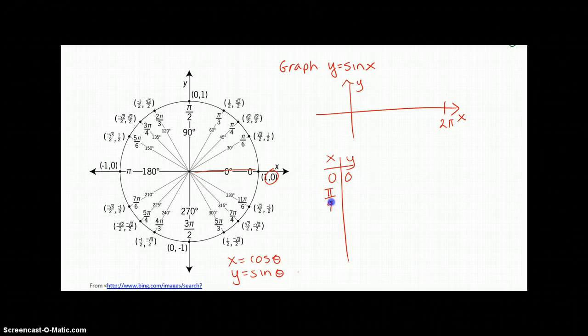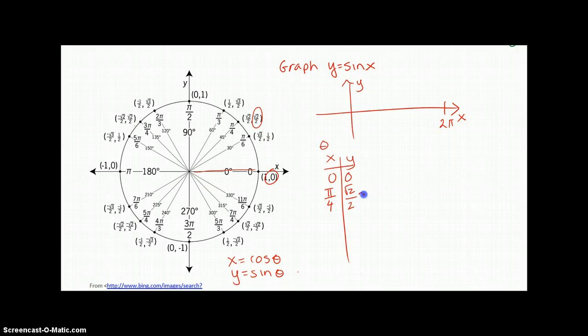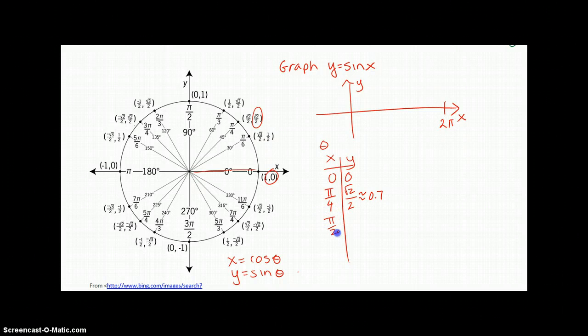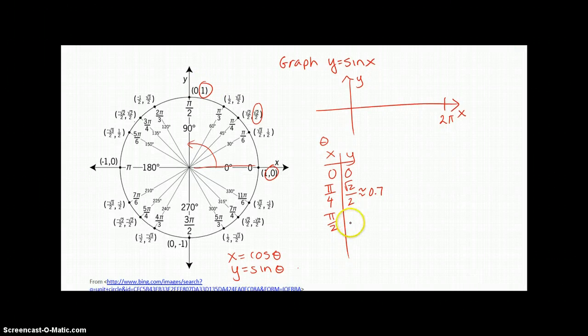I'm going to do this by making a chart. I would like to look at a full two pi. If I look at zero degrees, we know sine is the y value, so that's just zero. If I look at pi over four, and look at the y value, that is square root of two over two, which is 0.7. And pi over two, sine of pi over two is 90 degrees. The y value is one.